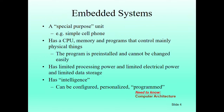Here are some more details about embedded systems. An embedded system is a special-purpose unit — for example, your simple mobile phone. The embedded system has a CPU, memory, and a program that controls mainly physical things. These programs are usually pre-installed and you cannot change them easily. Embedded systems have limited processing power, limited electrical power, and limited data storage, but they do have intelligence — they can be configured, personalized, and programmed.